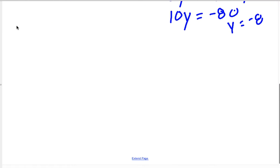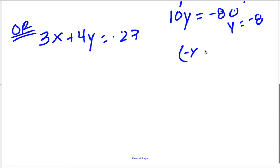You could also use elimination. It doesn't matter to me how you solve. It doesn't matter to the SAT how you solve. If you chose to use elimination, you probably would have multiplied this -x + 2y = -19. You would have probably multiplied that by a 3.